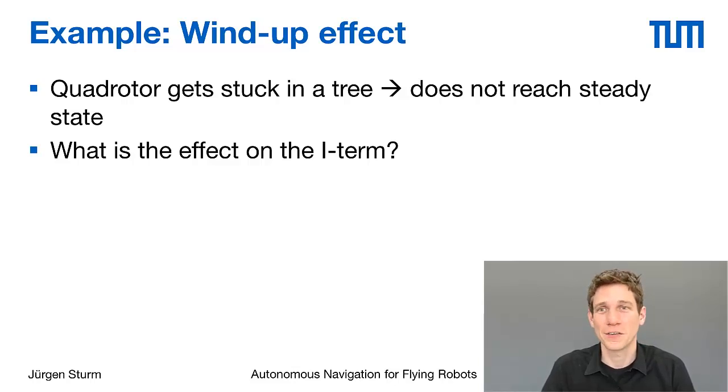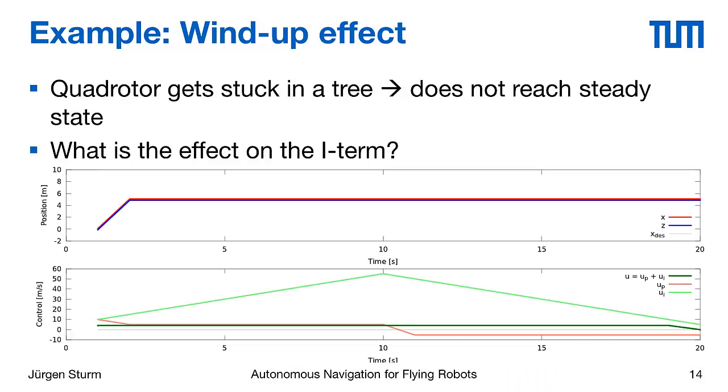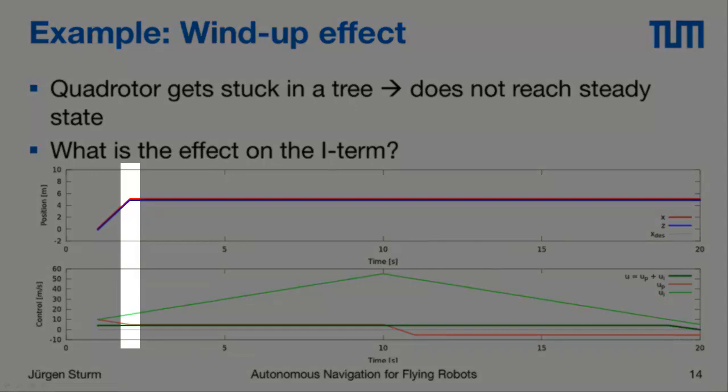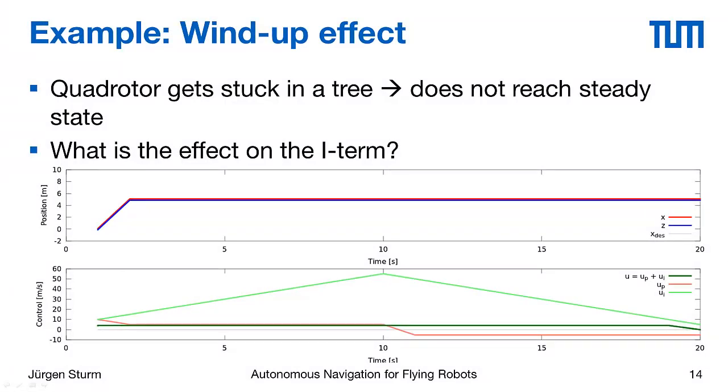To see why this is a problem consider the following example. Imagine the quadrotor goes to a certain location but then on its way gets stuck in a tree, so it cannot reach the steady state. The quadrotor is sent to a location of 10 in this example and goes quickly towards this location. But then roughly at a position of 5 it gets stuck in the tree. From there on this integral term keeps building up because it realizes that it needs to give more power to the motors to reach its goal location, but it can't because it is stuck. So this integral term grows larger and larger as you can see in the bottom plot.